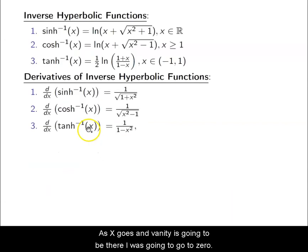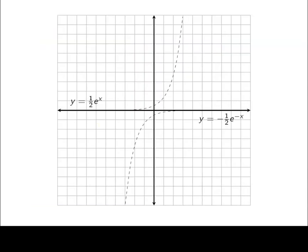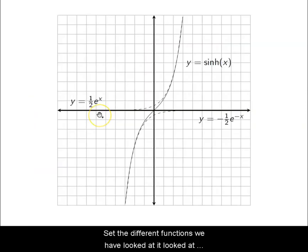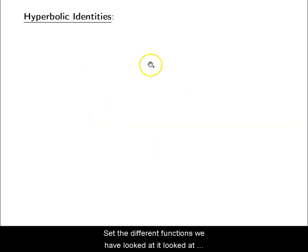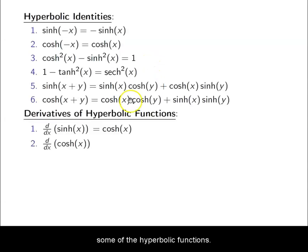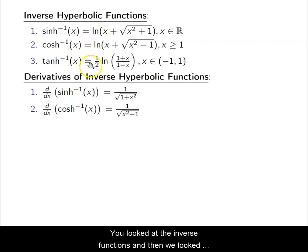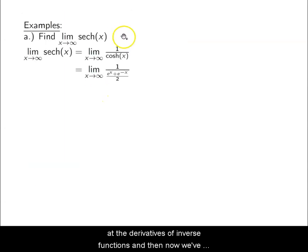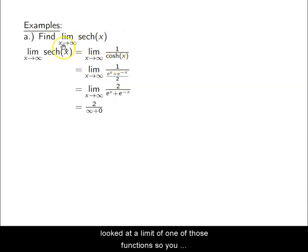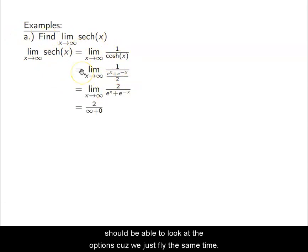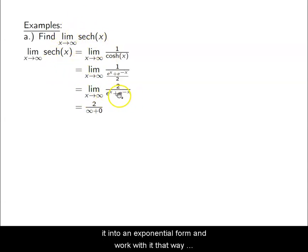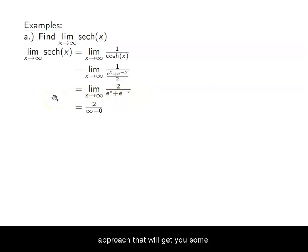So we've looked at the hyperbolic functions, their graphs, some identities, the derivatives, the inverse functions, the derivatives of the inverses, and now a limit. We should be able to evaluate the limit of any of these functions by applying the same principles. If you ever get stuck, just turn the hyperbolic function into its exponential form and work from there.